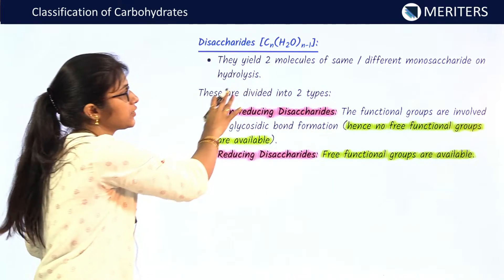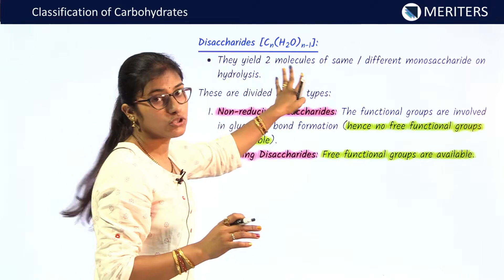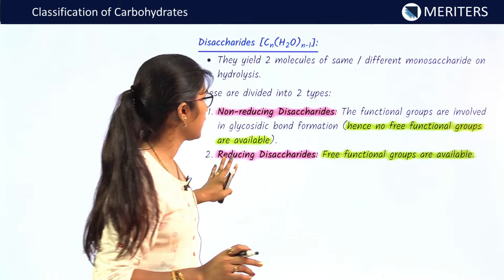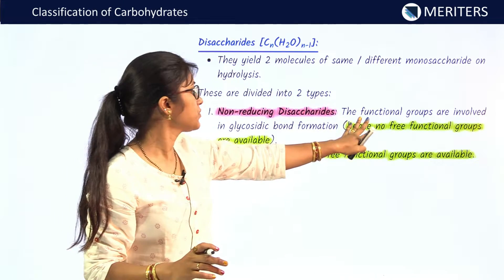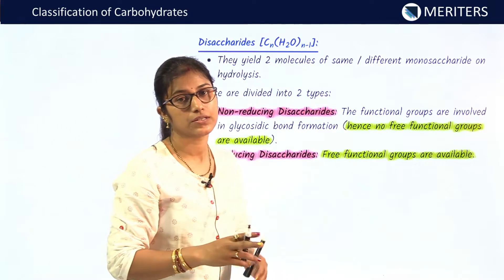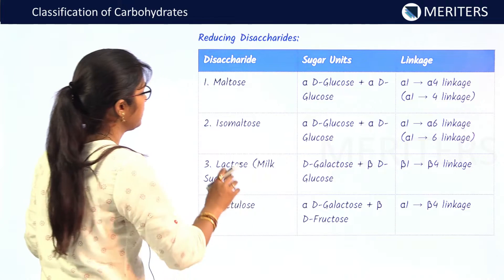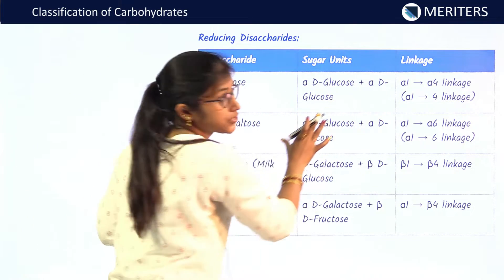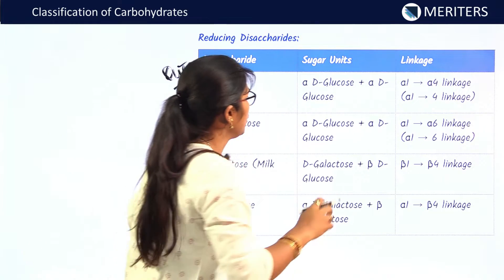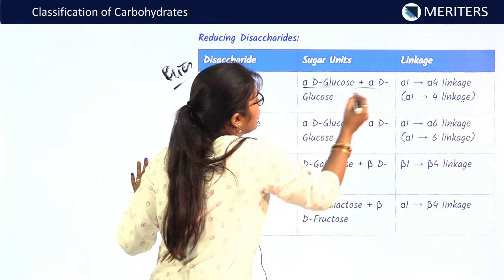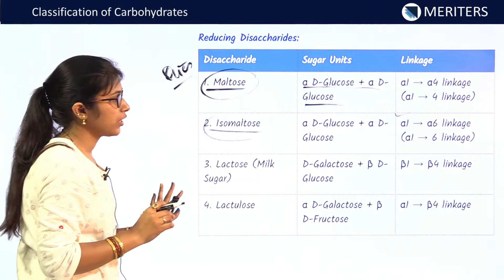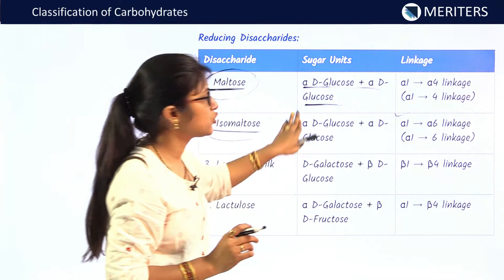Disaccharides yield two molecules of the same or different monosaccharides on hydrolysis. They are divided into two types: non-reducing disaccharides, where functional groups are involved in glycosidic bond formation so no free functional groups are present, and reducing disaccharides, where free functional groups are present. This table of disaccharides — covering sugar units and linkages — is very important for exams.